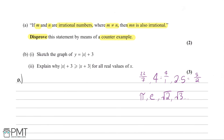In terms of surds, we would like it so that the square root of x times the square root of y gives us the square root of z, where z can be simplified down to just a constant. For this to be the case, z must be a perfect square number.